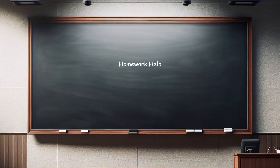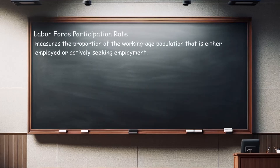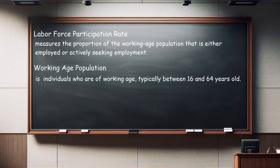Welcome to another homework help video. This video looks at calculating the labor force participation rate. The labor force participation rate measures the proportion of the working age population that is either employed or actively seeking employment. It helps us understand the level of workforce engagement in an economy. To calculate it, we first need to determine the working age population — individuals typically between 16 and 64 years old. You can find this data from official census or demographic sources.